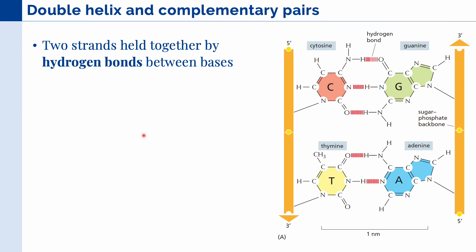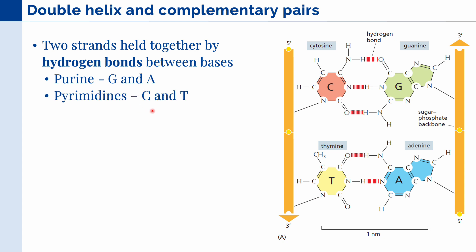Our nitrogenous bases can be divided into two classifications. First is the purines, G and A, or guanine and adenine, and we also have the pyrimidines, C and T, or cytosine and thymine. The way you can remember is that cytosine and thymine both contain the letter Y in their names, and so does pyrimidine.